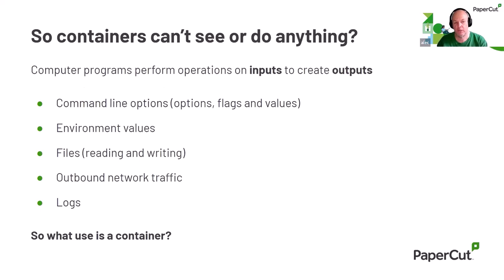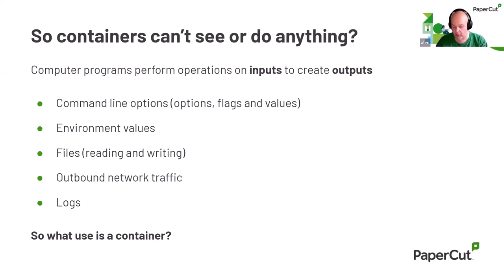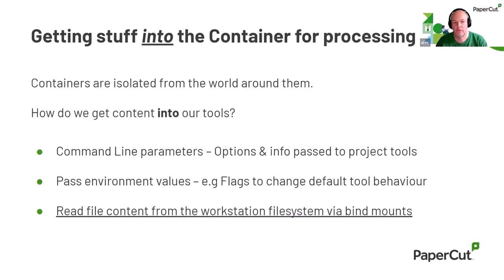A container by default only has access to the files and content provided in the image — it's all part of this isolation. The problem is that containers therefore can't do anything useful, because any program has to read inputs and write outputs. So how do we get things in and out? We use command line options to pass information, environment variables (name-value pairs we can set up and pass to a program), reading and writing files, outbound network traffic, and reading logs. To get information into a container: command line parameters, environment variables, and reading file content from the workstation file system via a mechanism called bind mounts.